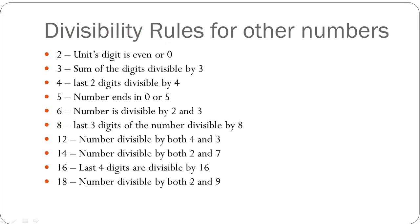Let's look at some other divisibility rules for basic numbers. For 2, the number is divisible if its units digit is even or 0. For 3, the sum of the digits must be divisible by 3. For 4, the last two digits must be divisible by 4. For 5, the number should end in 0 or 5. For 6, the number must be divisible by both 2 and 3. For 8, the last three digits must be divisible by 8. For 12, the number must satisfy the divisibility rule for both 4 and 3 — the last two digits divisible by 4 and the sum of digits divisible by 3.